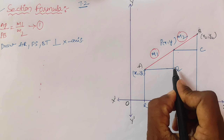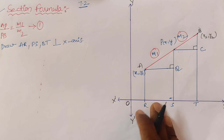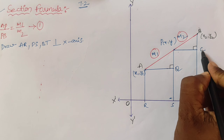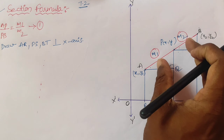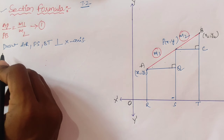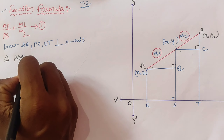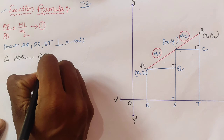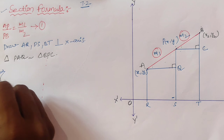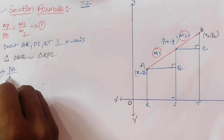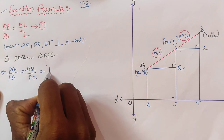Observe that triangle PAQ is a right triangle with right angle at Q, and triangle BPC has a right angle at C. Angle Q and angle C are both 90 degrees. Angle A equals angle P by the angle similarity criterion, so we can say these two triangles are similar. Triangle PAQ is similar to triangle BPC.